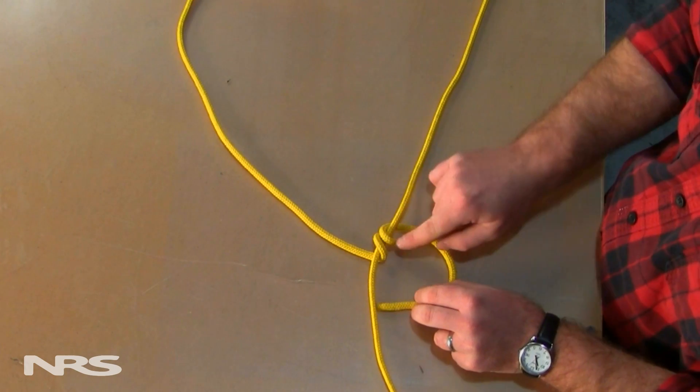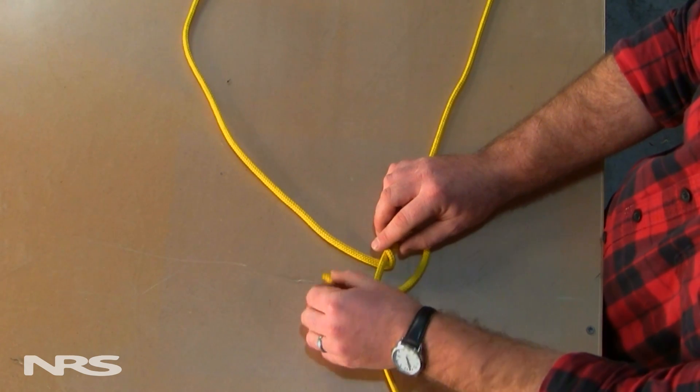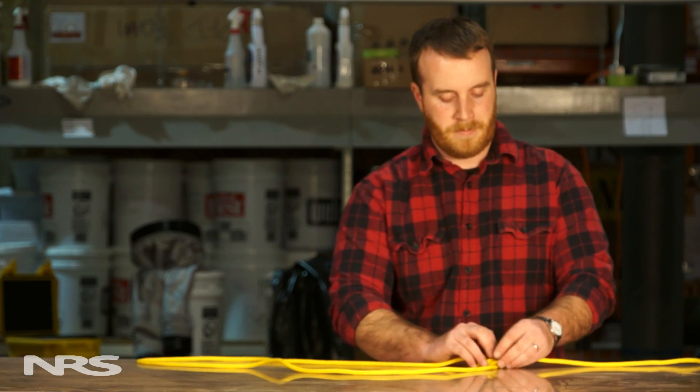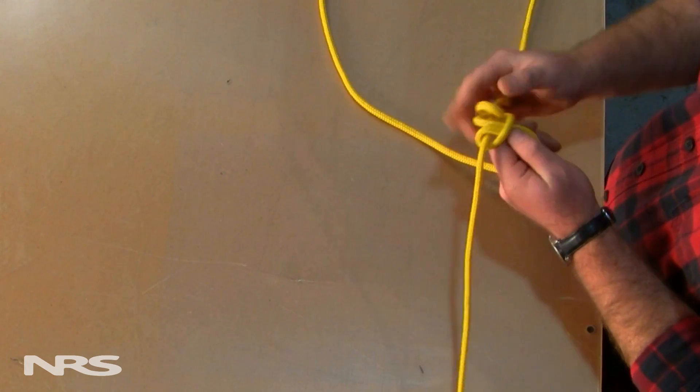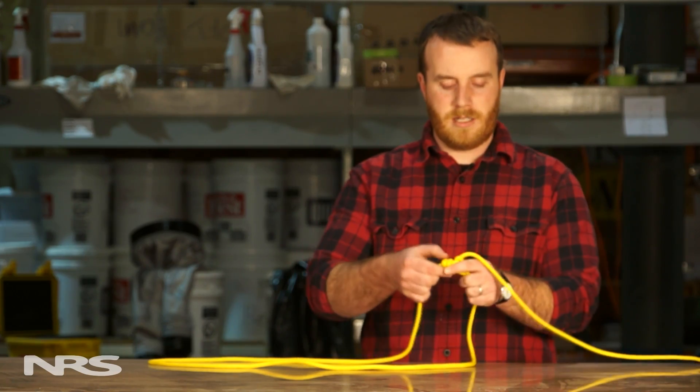You'll come over to the top of the coils, underneath the main portion of rope, and again, over and through the little loop you've just made. Pulling this tight, slowly, loosely, making sure your coils are nice and neat.